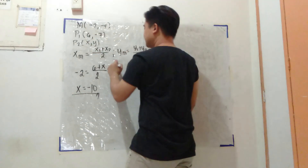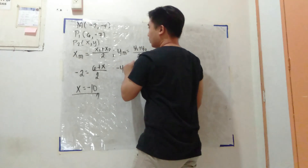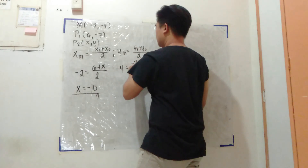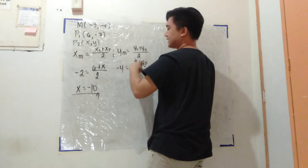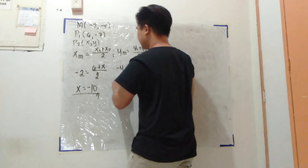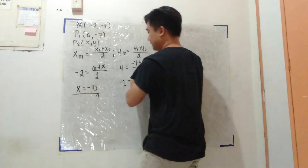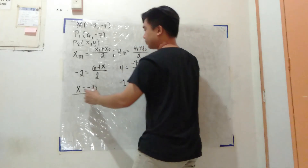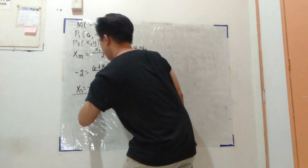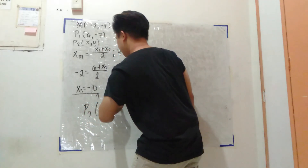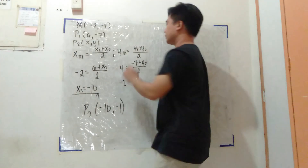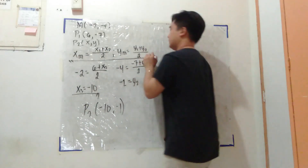And then si ym, that is equal to negative 4; y1 is equal to negative 7, plus y2, all over 2. So that is negative 8 transpose — negative 8 plus 7 — that is negative 1. So the coordinates of the second point is equal to negative 10 and negative 1. So ganyan lang po kapag midpoint. Ito po yung formula.